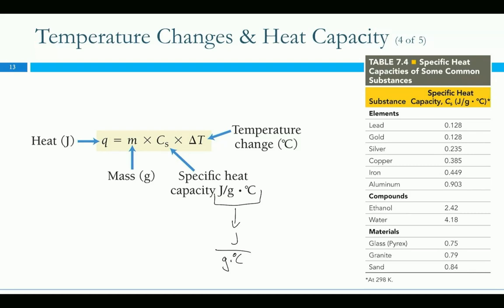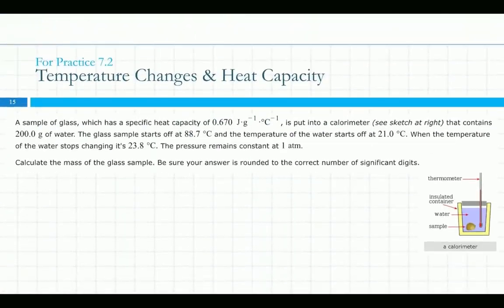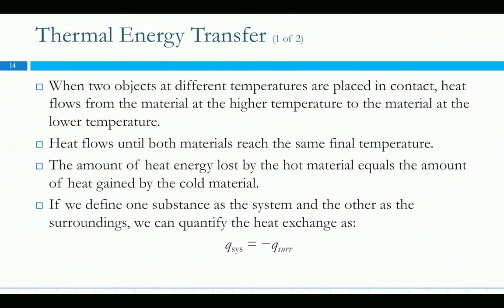The order of final minus initial matters because it matters whether something is heating up or cooling down. If we've got something that's losing energy — an exothermic process — then temperature final should be lower than the initial temperature, meaning we lose heat. If something's warming up, it'll be the opposite. Let's do a quick example from one of these practice problems.